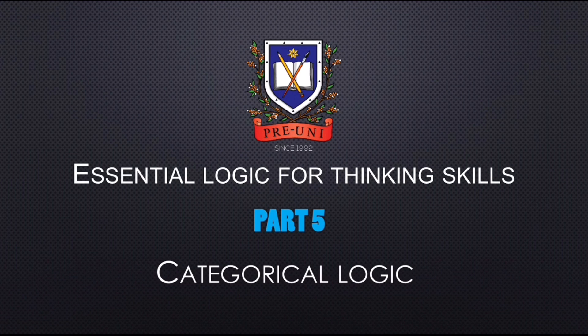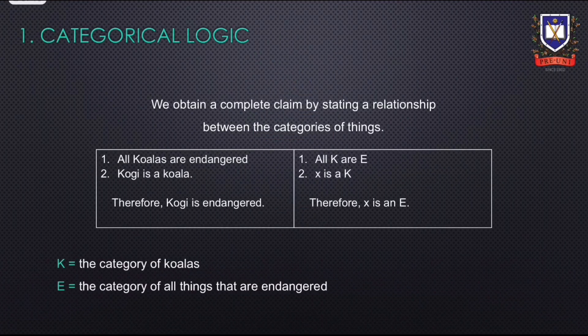Welcome to part 5 of an explanation of different logic questions that you may encounter. In this part, we will be looking at categorical logic. Categorical logic is when we obtain a complete claim by stating a relationship between the categories of things.